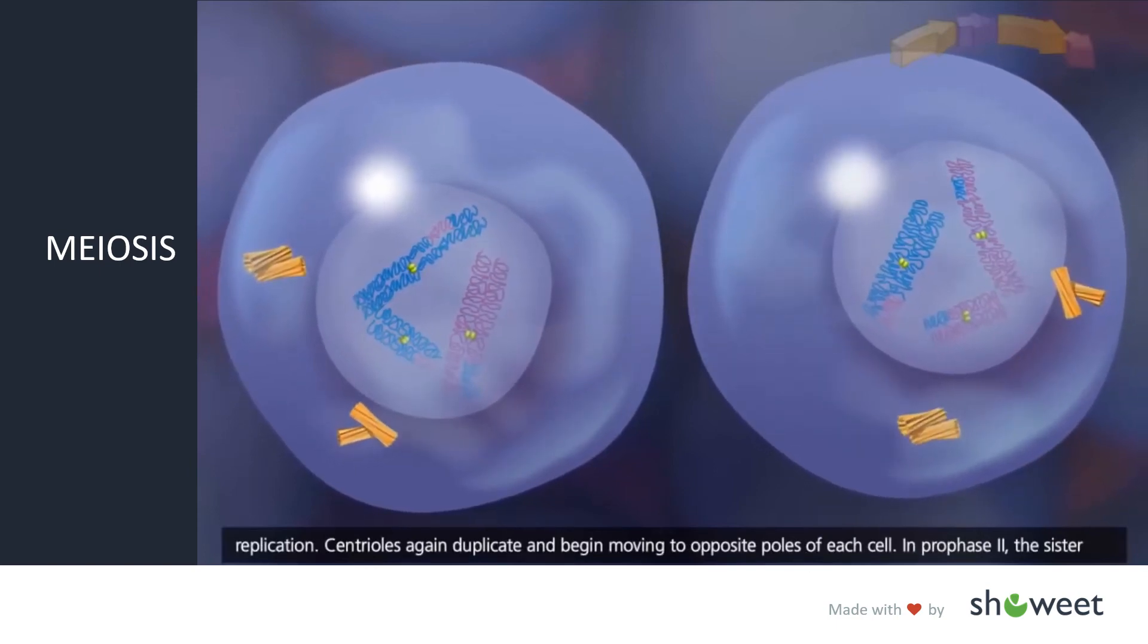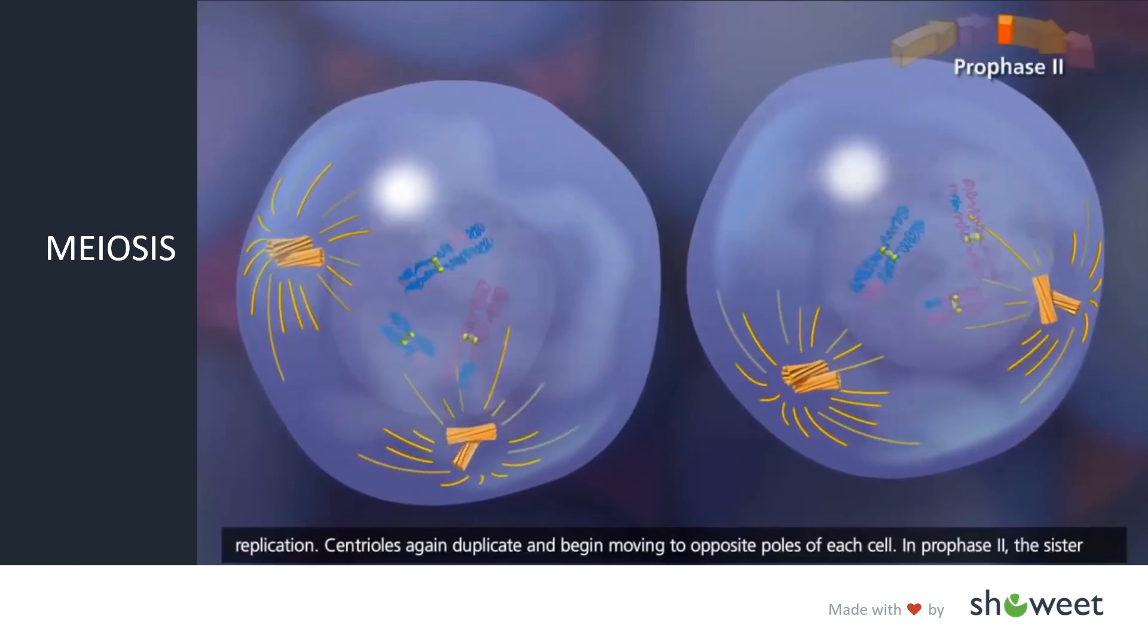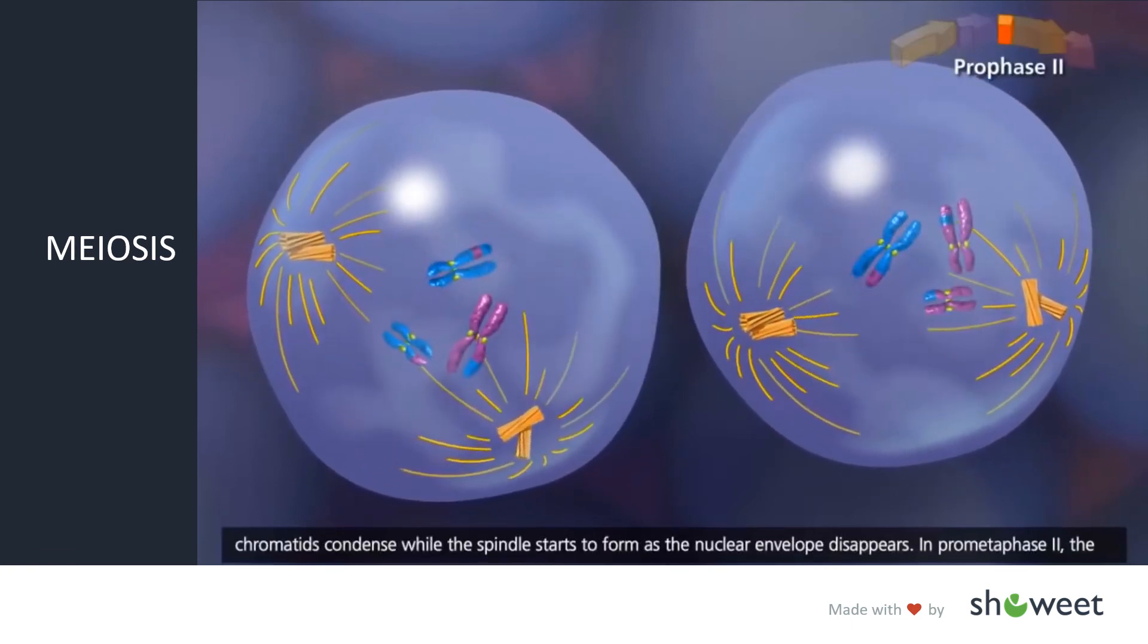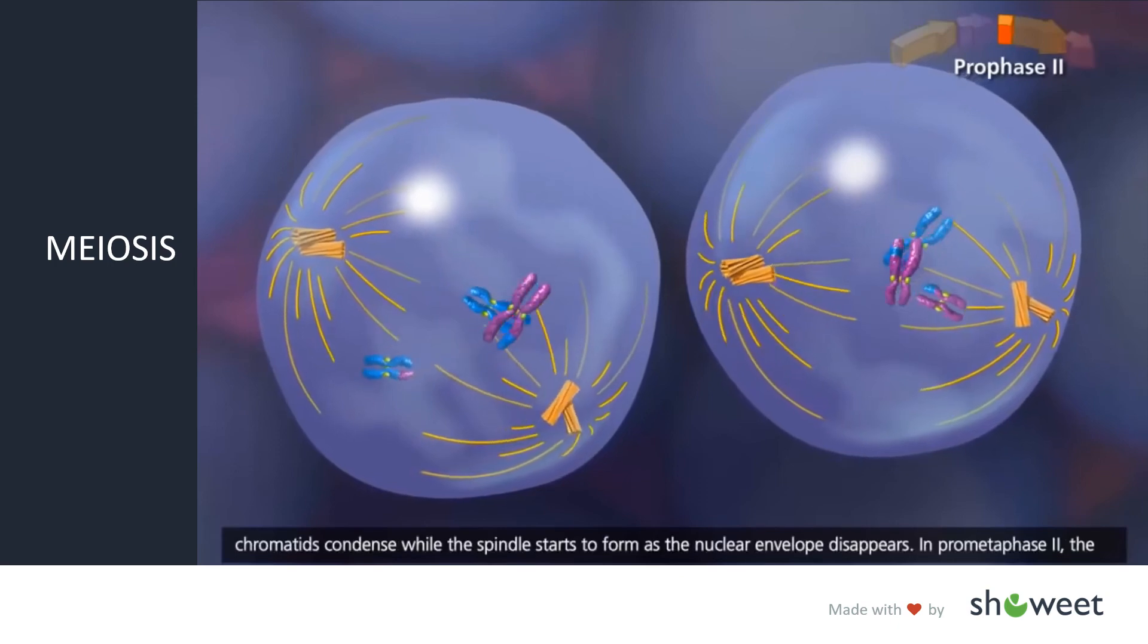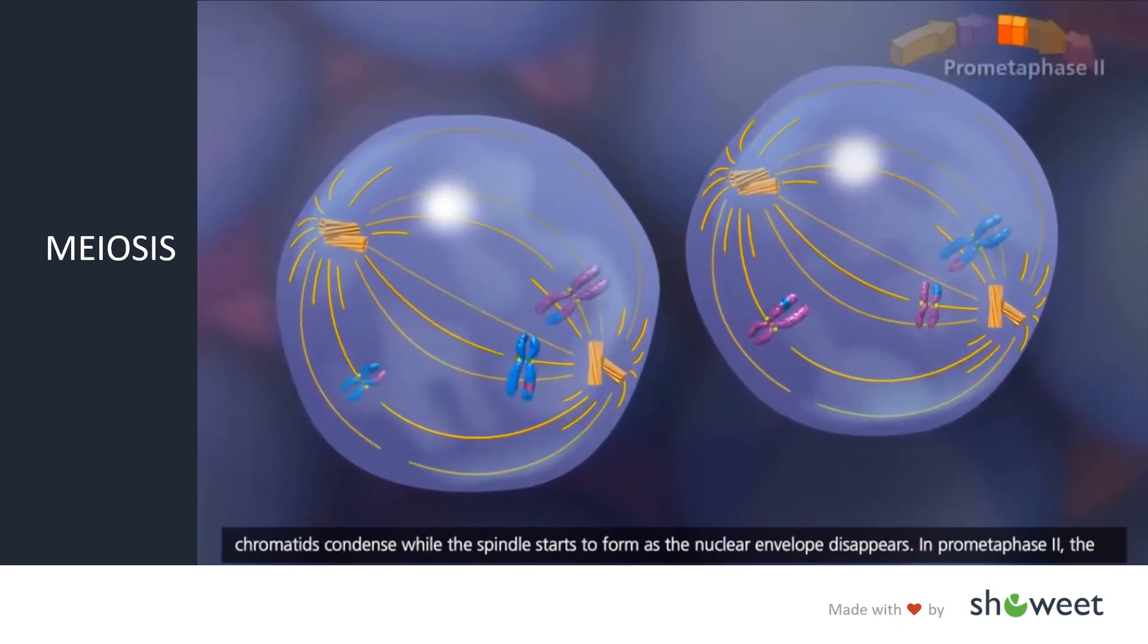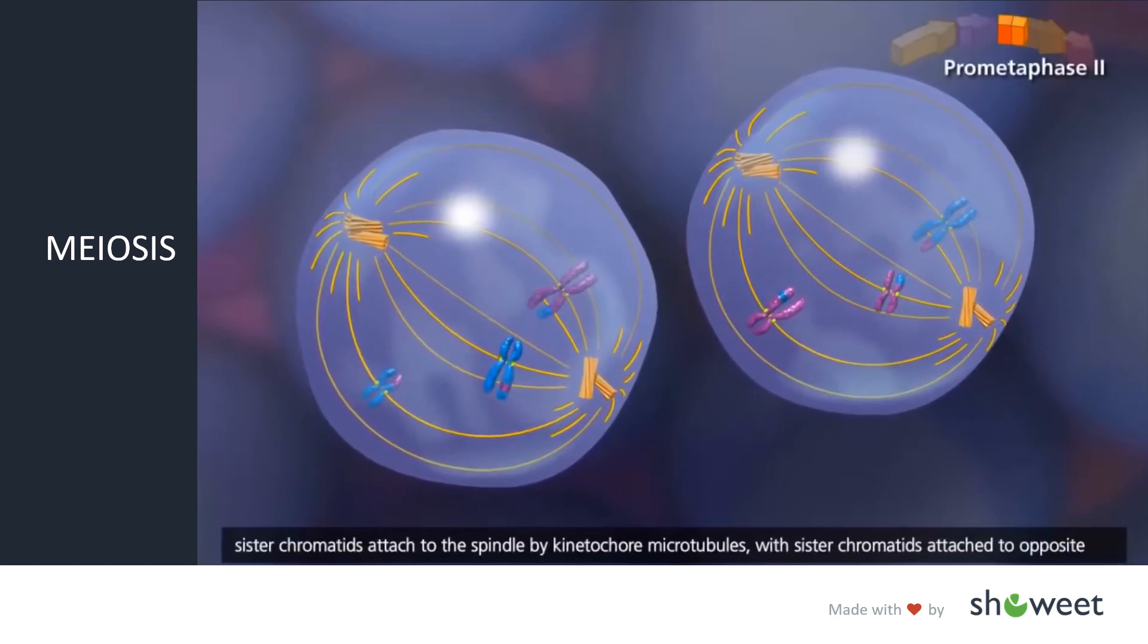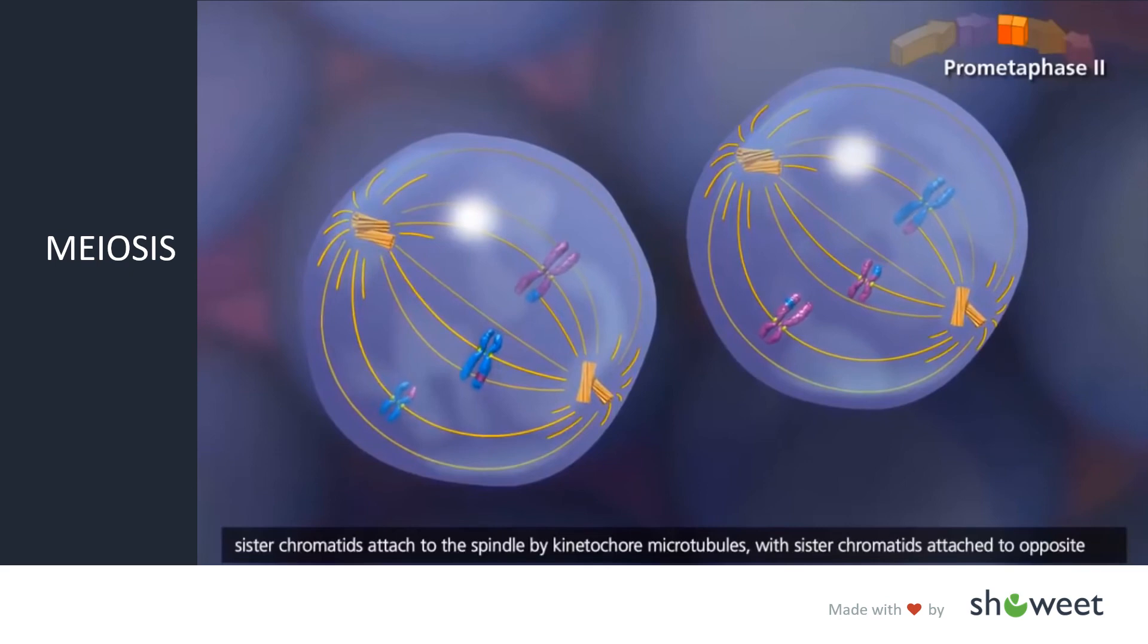Centrioles again duplicate and begin moving to opposite poles of each cell. In prophase II, the sister chromatids condense while the spindle starts to form as the nuclear envelope disappears. In prometaphase II, the sister chromatids attach to the spindle by kinetochore microtubules, with sister chromatids attached to opposite poles.